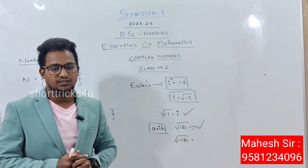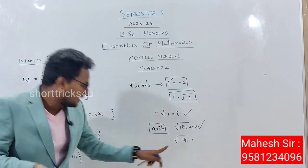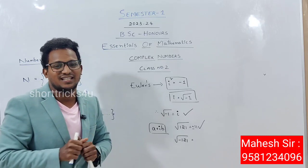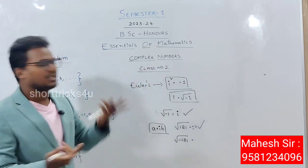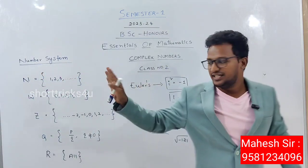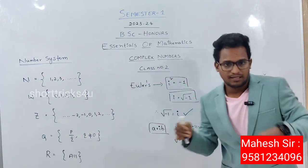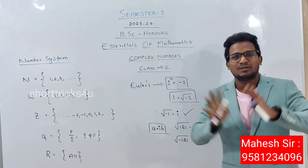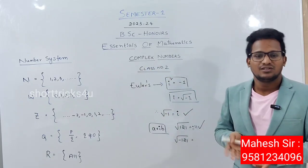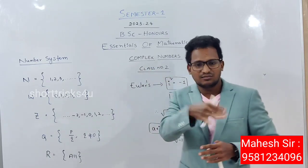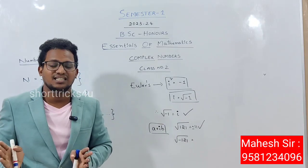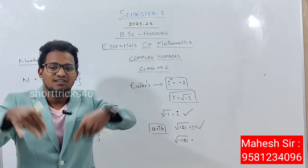Root over minus 121 is called a complex number because i is present inside the root. Root over 121 is a normal number — plus or minus 11 — which is a real number. There is no real number that satisfies the square root of a negative value. That is what makes it complex. This concept is very easy to understand; it is fundamental to intermediate and degree level mathematics.